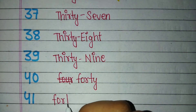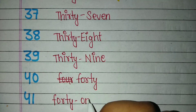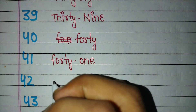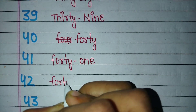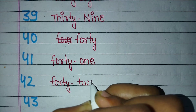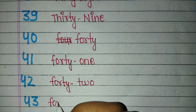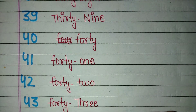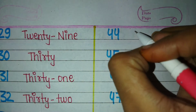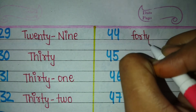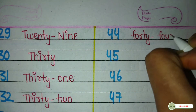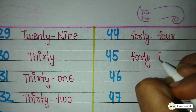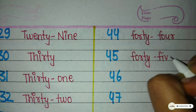Forty — F-O-R-T-Y — 40. Forty-one — F-O-R-T-Y — 40, O-N-E — 1 — 41. Forty-two — F-O-R-T-Y — 40, T-W-O — 2 — 42. Forty-three — F-O-R-T-Y — 40, T-H-R-E-E — 3 — 43. Forty-four — F-O-R-T-Y — 40, F-O-U-R — 4 — 44. Forty-five — F-O-R-T-Y — 40, F-I-V-E — 5 — 45.